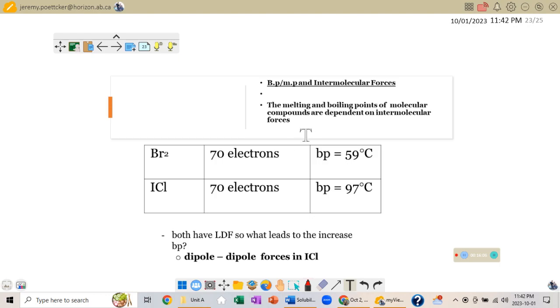Coming back to our molecular crystals, melting and boiling points of molecular compounds are totally dependent on intermolecular forces. So if we can imagine, for example, bromine and iodine monochloride, they both have 70 electrons. But why is there such a difference here? Well, the big difference is what kind of forces are there between them? Bromine is non-polar. There's London forces, that's about it. Iodine monochloride, same thing, London forces. But we have dipole-dipole forces here in the iodine monochloride. And those dipole-dipole forces increase our boiling point from 59 to almost 100.